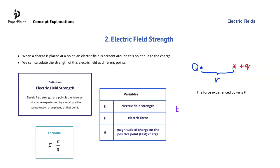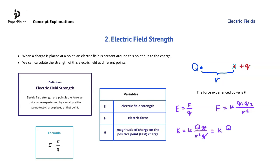This is how we get that E, the electric field strength, is equal to F — the force experienced by lowercase q — divided by lowercase q. Let's combine this equation with Coulomb's law. Substituting the Coulomb's law expression in place of F, we get that E is equal to k times the product of the two charges, uppercase Q times lowercase q, divided by r squared — all then divided by lowercase q. Lowercase q cancels, and we end up with E equals k times uppercase Q over r squared. This formula tells us that electric field strength is directly proportional to the magnitude of the charge, and inversely proportional to the square of the distance from the charge.